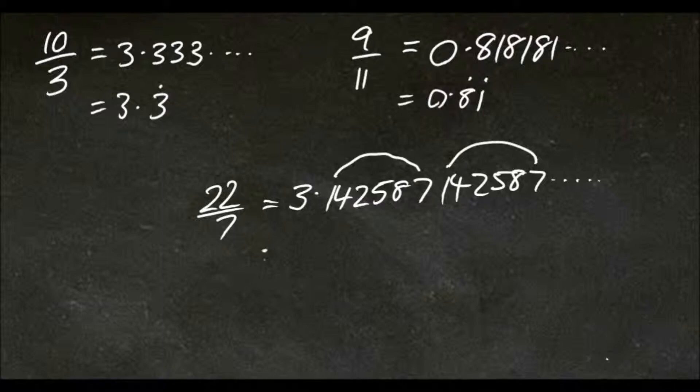So we'd write this as 3.142587, and then we'll put a dot above there and above there, which indicates that all these keep repeating.